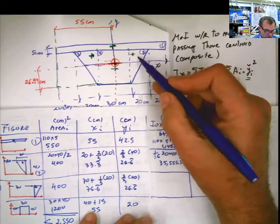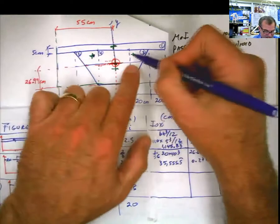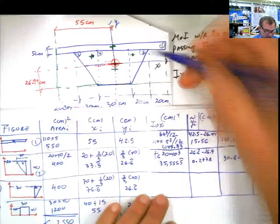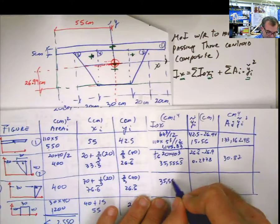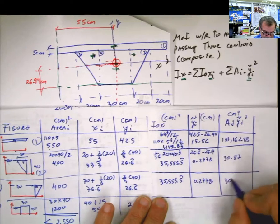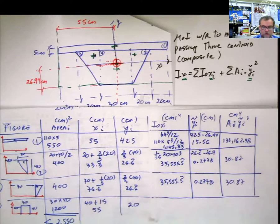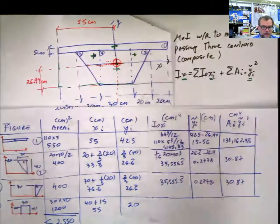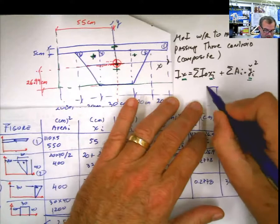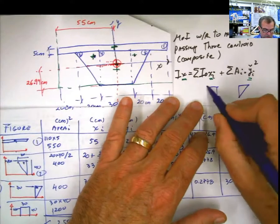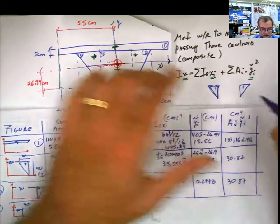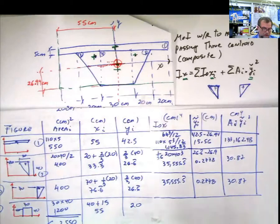For figure 3, it is exactly the same as figure 2. The dimensions are exactly the same, and the distance is exactly the same. So the centroidal moment of inertia and the transfer term A·d² are both the same as figure 2 — 30.87 centimeters to the fourth as well. If you have been working with this for a while, you could have combined figures 2 and 3 into one, since everything is symmetric.